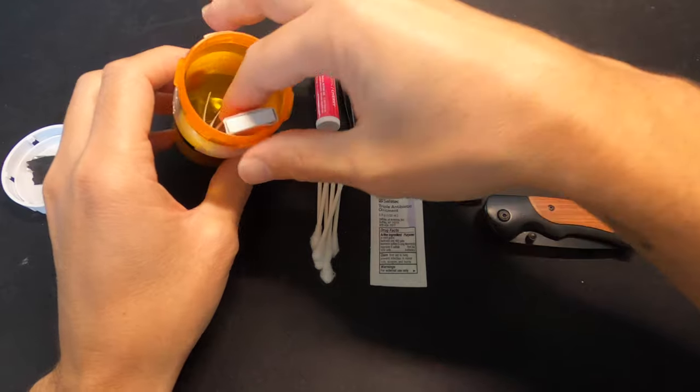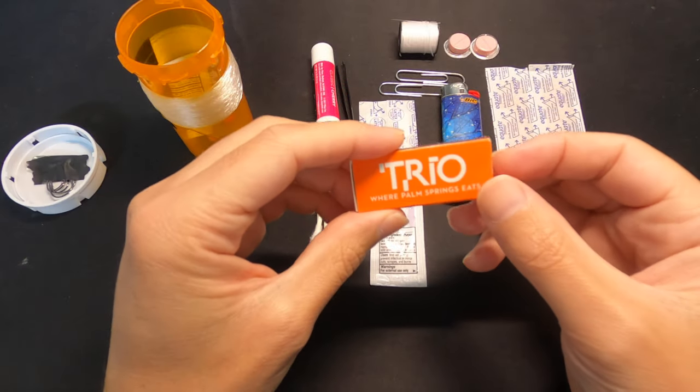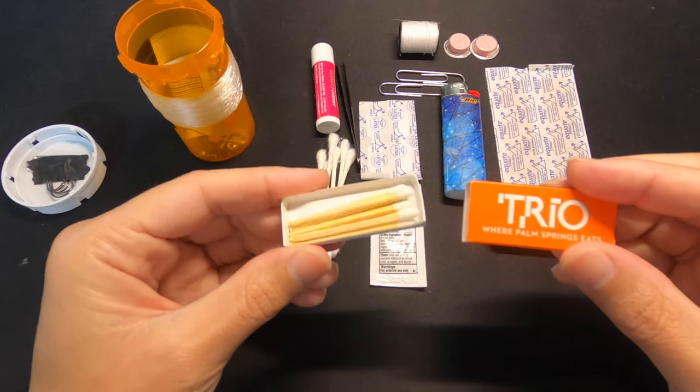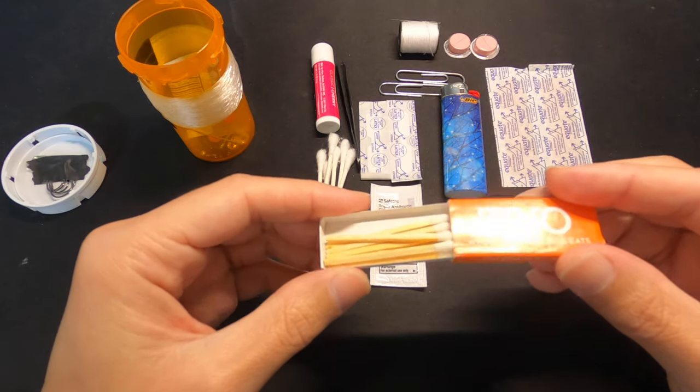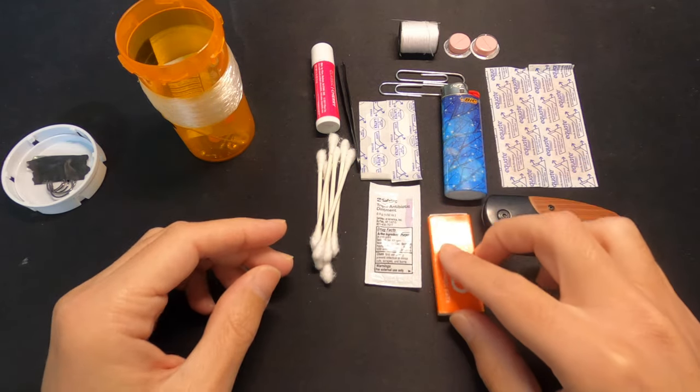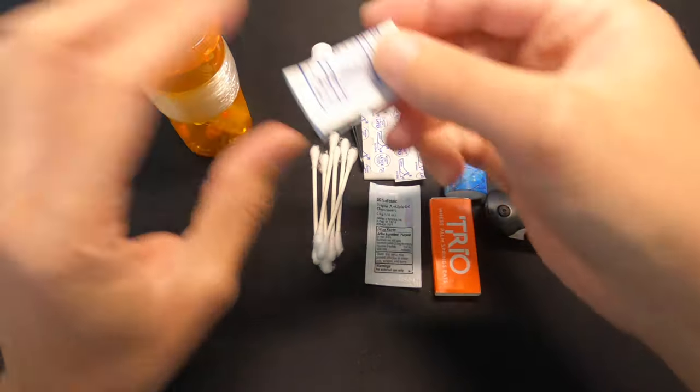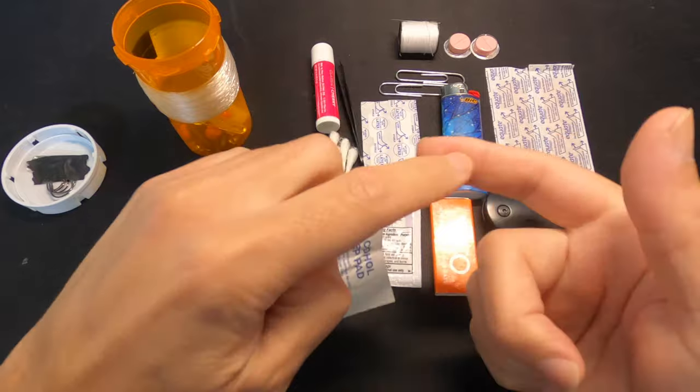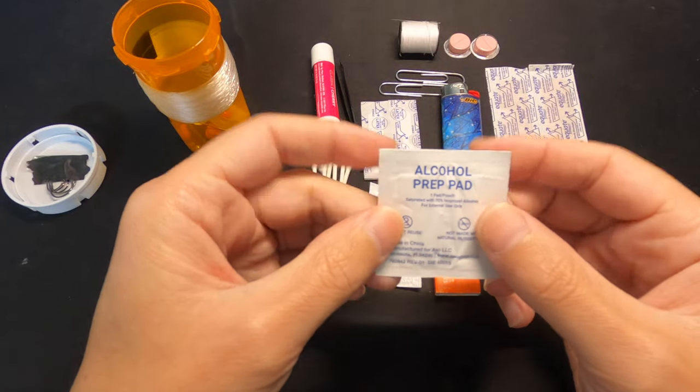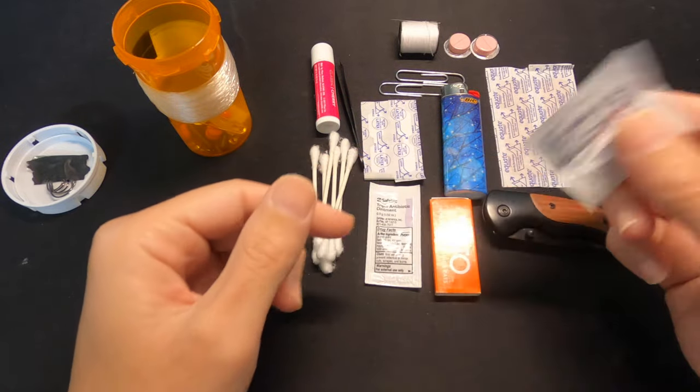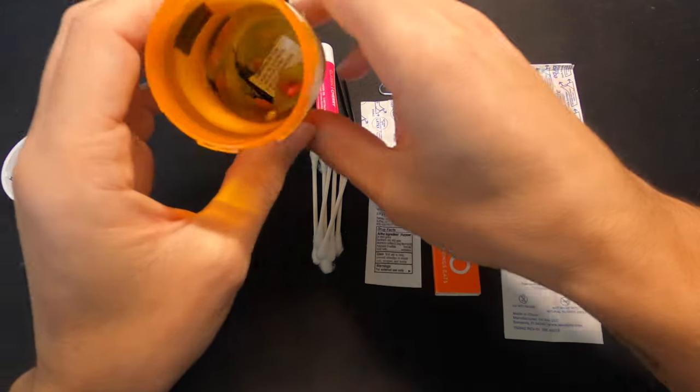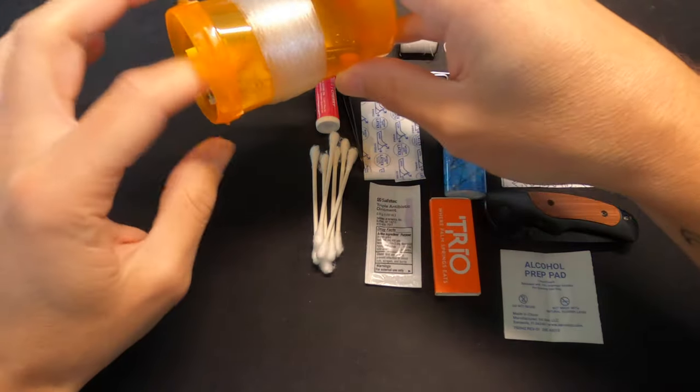And speaking of matches, I have a little package of those here. I know I got the lighter, but it's good to have matches, too. They're made out of wood. It's good tender and can never have enough ways to start a fire, in my opinion. Next up, alcohol prep pad. You cut your finger or something like that. You can clean it up, disinfect it. Actually, you could probably use that to start a fire, too, that alcohol. Now that I'm seeing this stuff, I'm thinking of things I never put it in for.